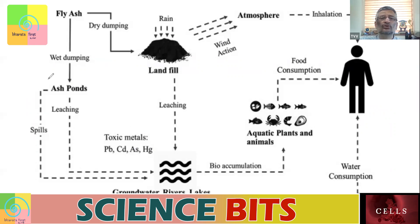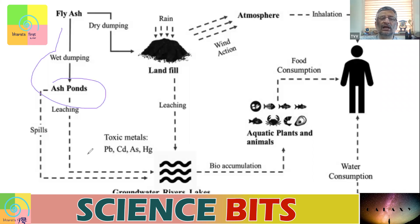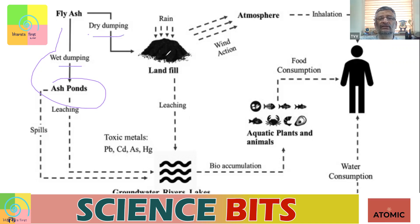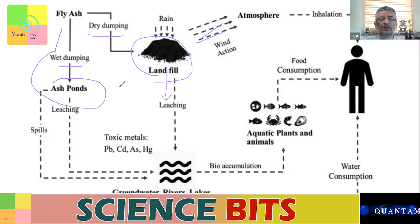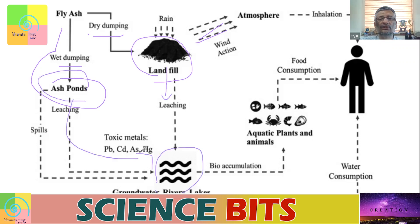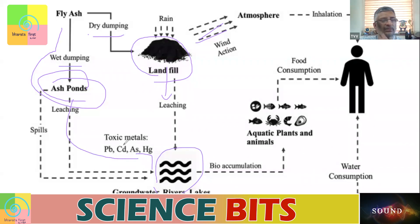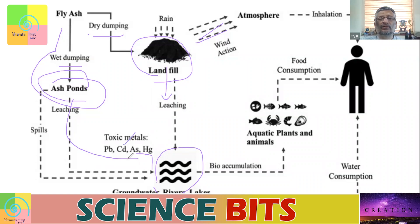If fly ash is left in the environment, it is usually dumped in ash ponds. If it is dry dumped, it goes into a landfill where wind can carry it into the atmosphere, or it can leach into groundwater. If it is wet dumped, it can again leach into groundwater. Fly ash usually contains heavy metals like cadmium, which are all toxic.